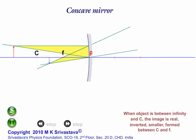In this third standard situation, the object is between infinity and the center of curvature, and its image is formed between the focal point and the center of curvature.